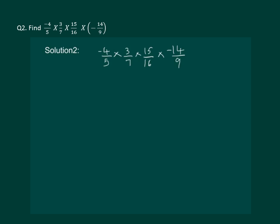Let us read the question. Find the value of (-4/5) × (3/7) × (15/16) × (-14/9). Let us use commutative property for solving this question, which says that if we multiply A with B, it is same as multiplying B with A. That means we can change the order of multiplication.